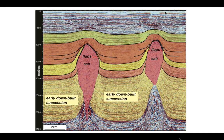In the main synclines we've got thick downbuilt successions where sediment aggradation is simply piled up, presumably expelling salt from underneath to feed into the salt bodies visible in the profile. The incremental growth of the salt and the subsidence of the intervening basin floor is picked out by the stratal geometries that we've just interpreted.